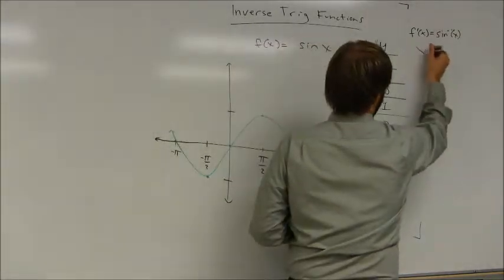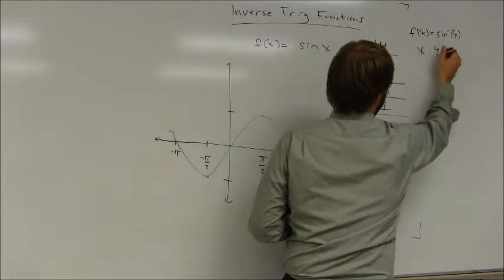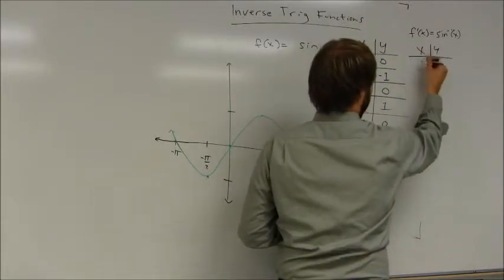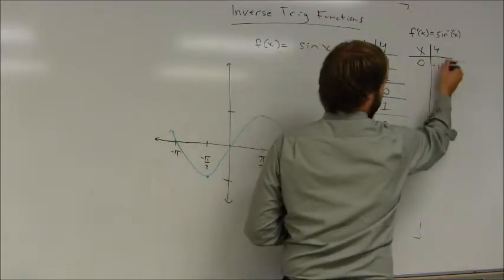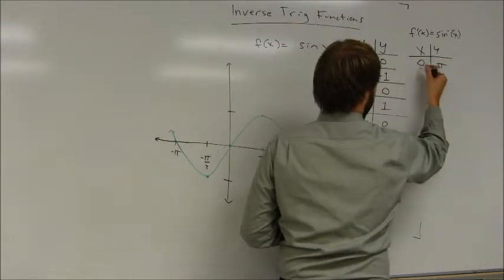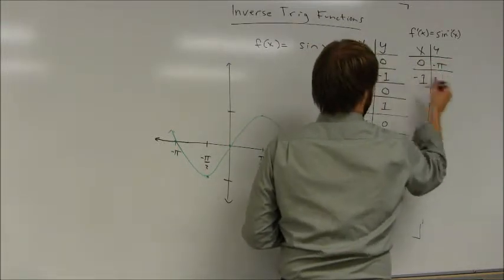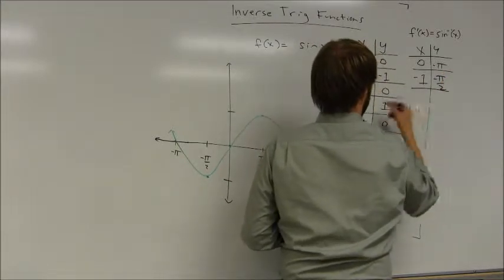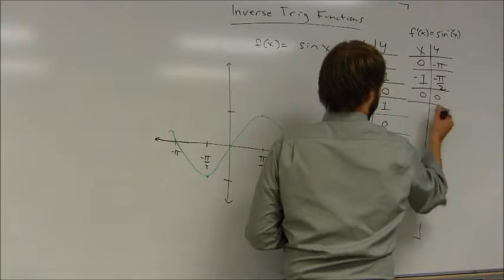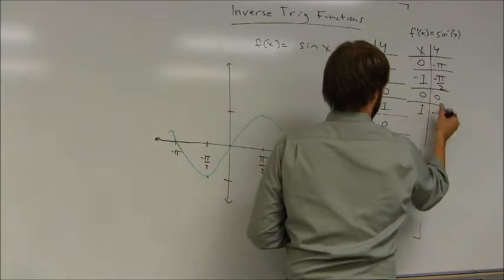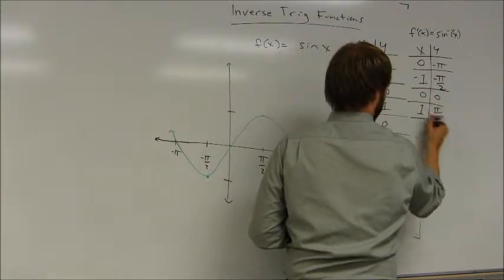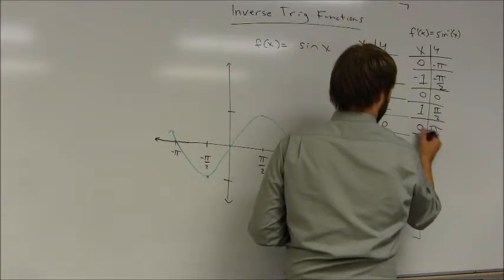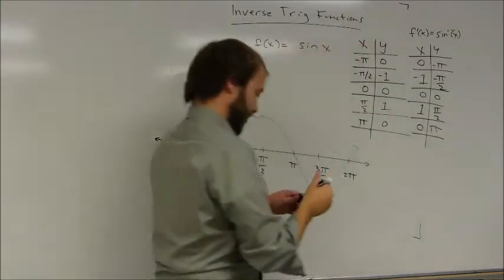So technically if I wanted to make a table of what was happening here, I could really just switch coordinates. So an input of zero gives me an output of negative pi. An input of negative one gives me an output of negative pi over two. An input of zero gives me an output of zero. An input of one gives me an output of pi over two. An input of zero gives me an output of pi, and so on and so forth.